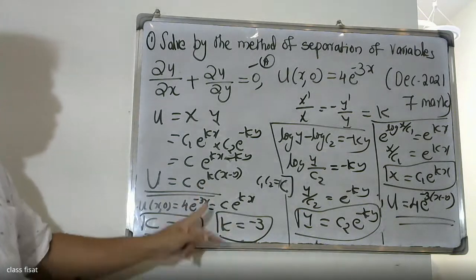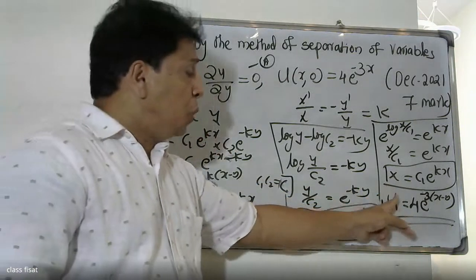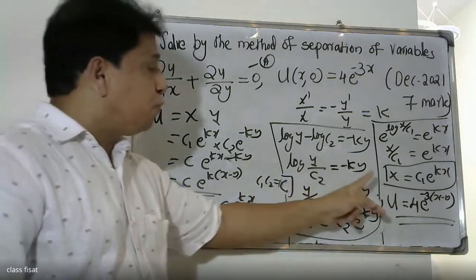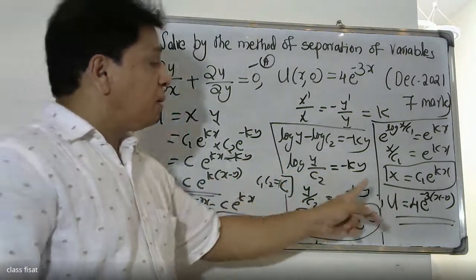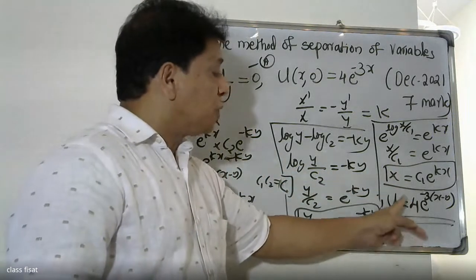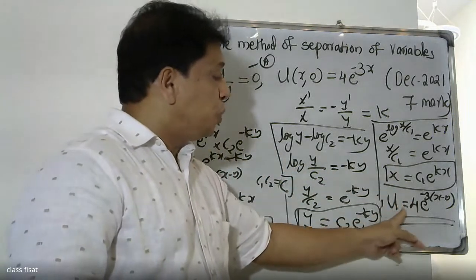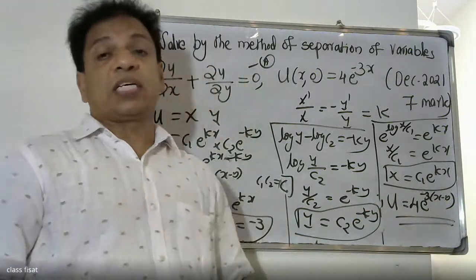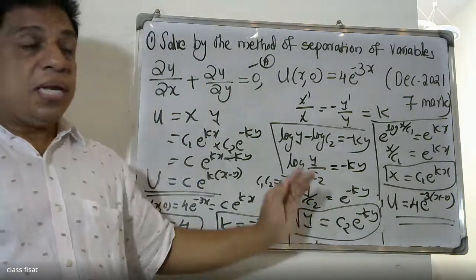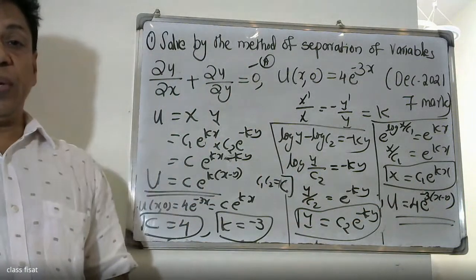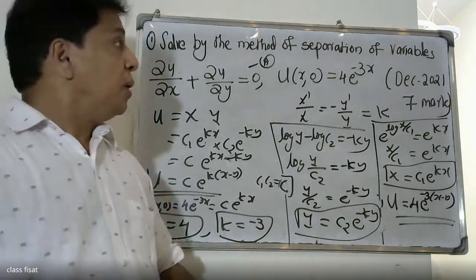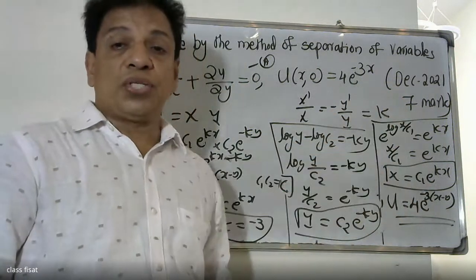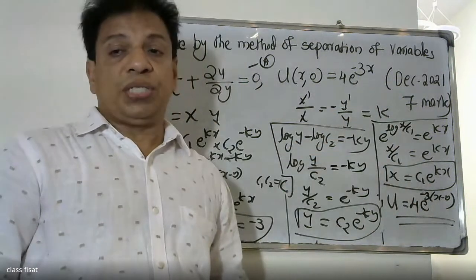Therefore the final solution is u = 4·e^(−3(x−y)) = 4e^(−3x+3y). This is the solution to the partial differential equation using the method of separation of variables.